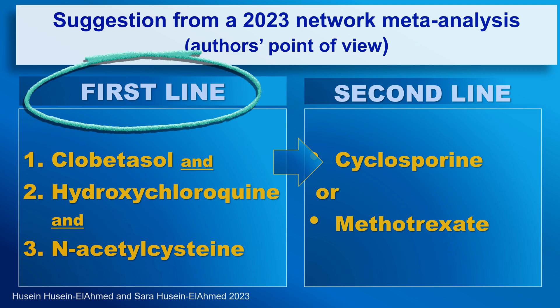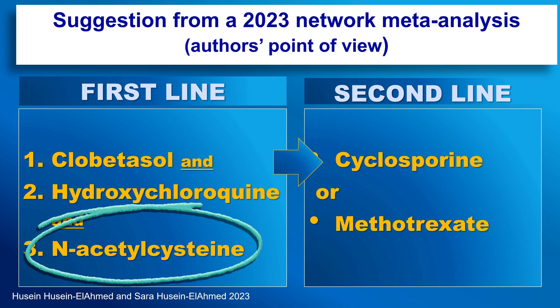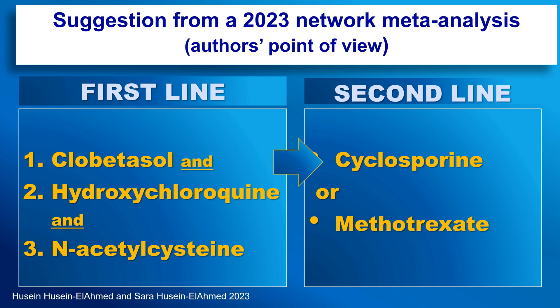The authors suggest starting with a combination of three medications: first, clobetasol; second, hydroxychloroquine; and third, N-acetylcysteine. N-acetylcysteine may be a little surprising as this is quite new. There is a study showing that N-acetylcysteine significantly decreases the LPP activity index (LPP-AI) in patients with LPP.